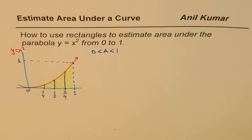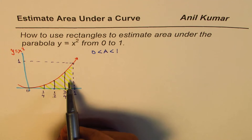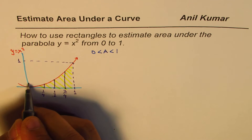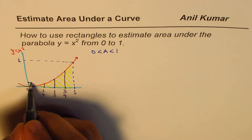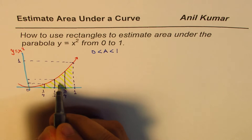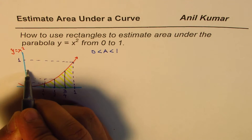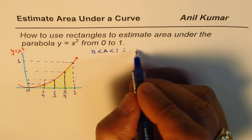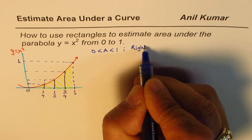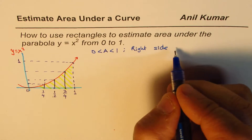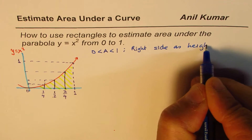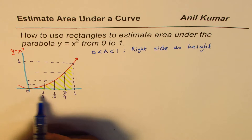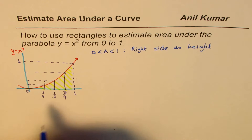Now finding the area of these rectangles — this side is kind of a curve, but what we can do is form a rectangle. Better than the big rectangle, we could say this is my rectangle. I'm just taking the value on the right side of the rectangle as the height of the rectangle. So if I take the right side as the height of the rectangle, that will be the value of the function at that right endpoint. The first rectangle ends at one over four.